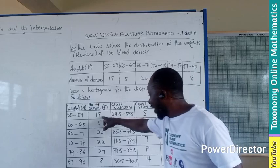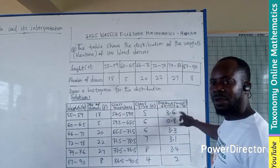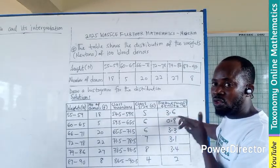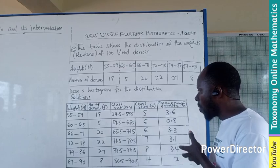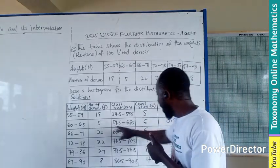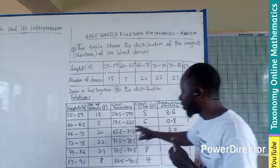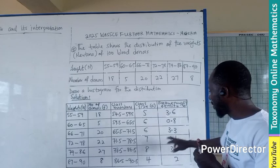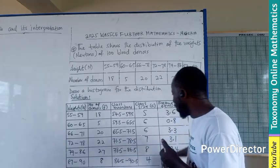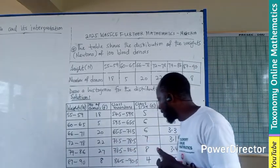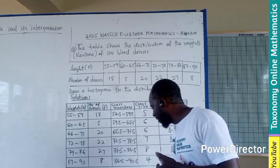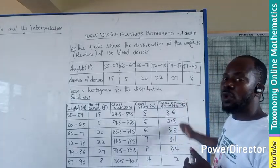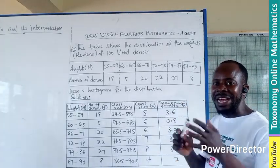And how do we get that? So 18 divided by 5 will give you this. We can get 2 decimal places. I want to go for 1 decimal place. 5 divided by 6, you get this. 20 divided by 6, 3.3. 22 divided by 7. 27 divided by 8. And 8 divided by 4. This gives you your frequency density.